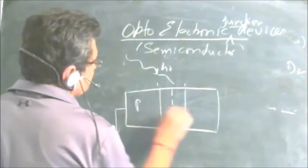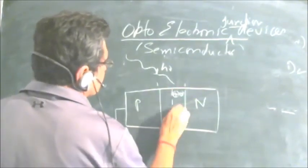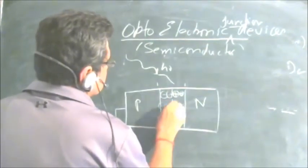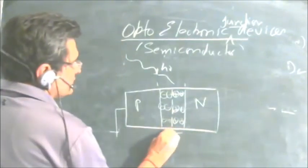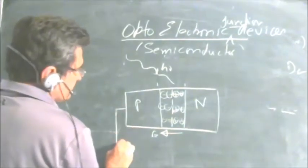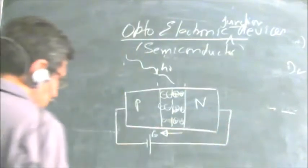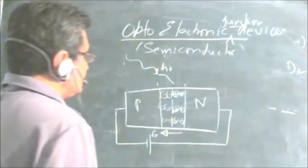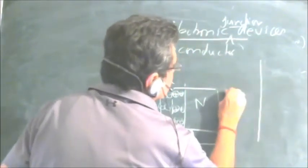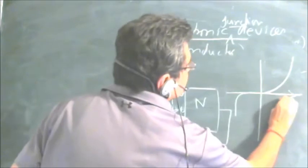If this is the P-side and this is the N-side, the junction will have positive charge because of diffusion and negative charge in the depletion region, and there is an electric field due to this charge. The photodiode is operated in reverse bias, where P is connected to negative and N is connected to positive. Because of reverse bias operation, we have current due to minority carriers. This is the forward bias region and this is the reverse bias region of the diode.